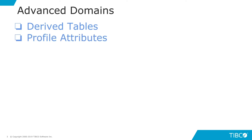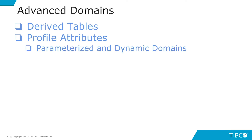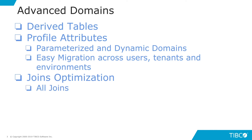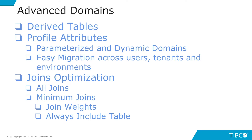Next, we'll look at profile attributes, which allow the Domain Designer Admin to build parameterized and dynamic domains that can be easily migrated across users, tenants, and environments. Then we'll look at Joins Optimization, where we'll look at the different options a Domain Designer Admin has to control the generated SQL — all joins versus minimum joins, join weights, and always include table options. Lastly, we'll look at Domain Dependency, covering internal and external domain dependencies.